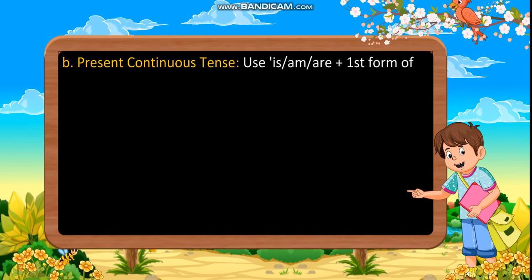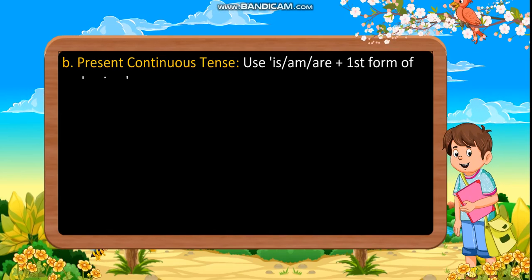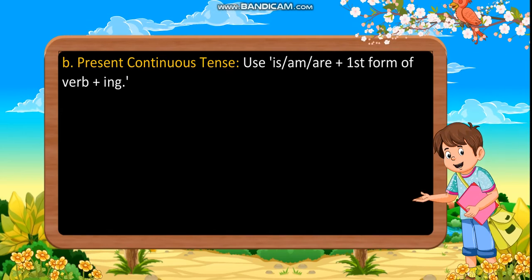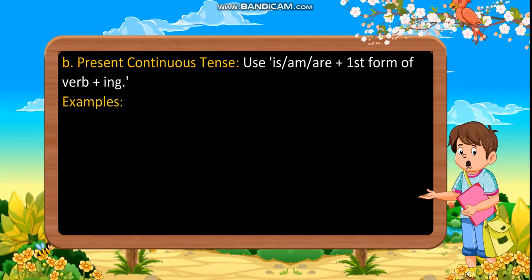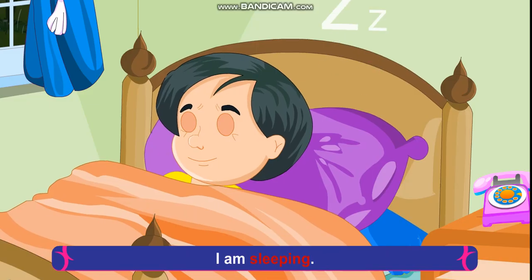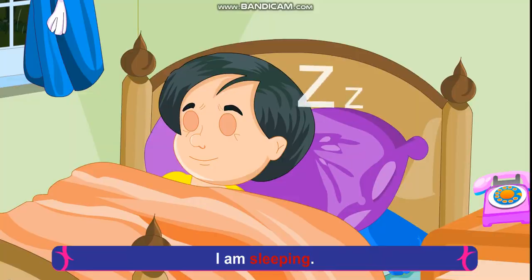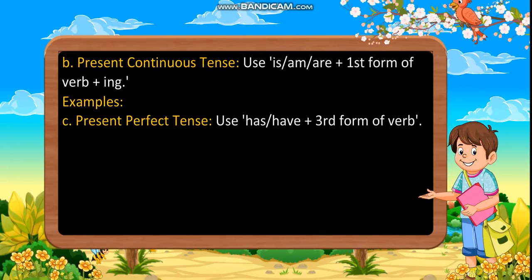Present continuous tense: Use is, am, or are plus the first form of verb plus I, N, G. Examples: She is eating an apple. I am sleeping.